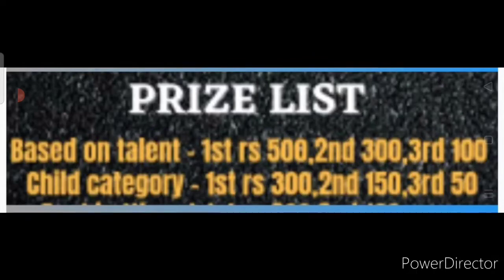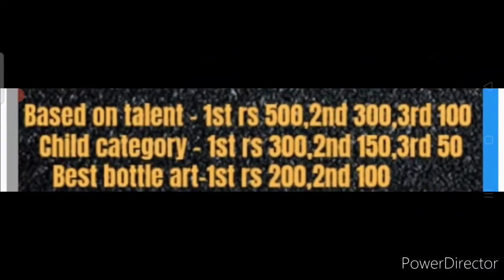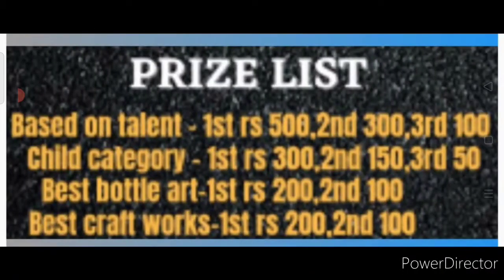In the Child category: First prize is 300 rupees, Second is 150 rupees, and Third is 50 rupees. Best Bottle Art: First rupees 200, Second rupees 100. Best Craft Works: First prize is 200 rupees, Second is 100 rupees.